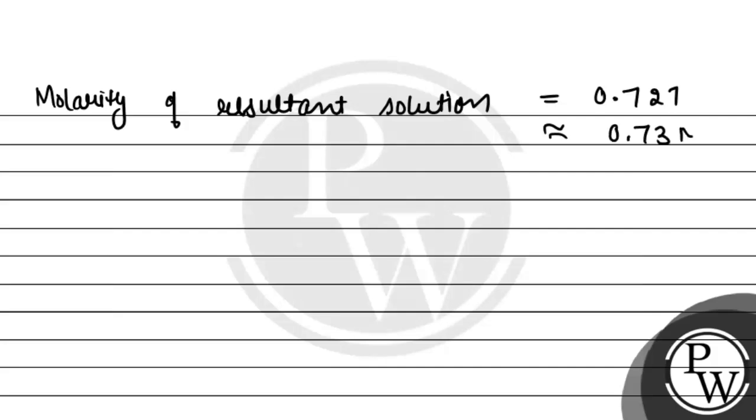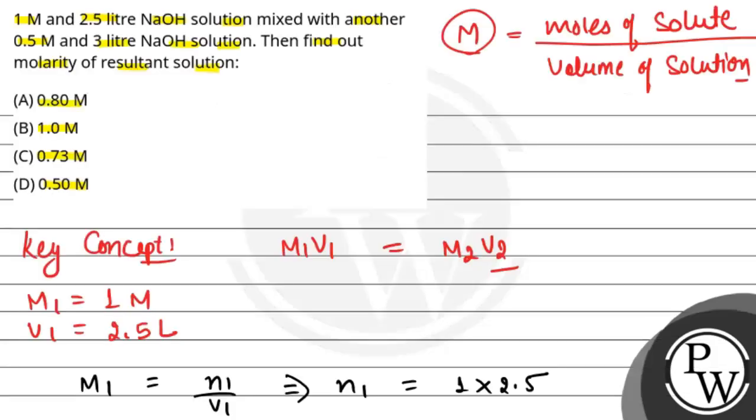From here, the molarity of resultant solution is 0.727, which we can round off to 0.73 molar. So the final answer is 0.73 molar, which is option C. Hope you understood it well. Best of luck.